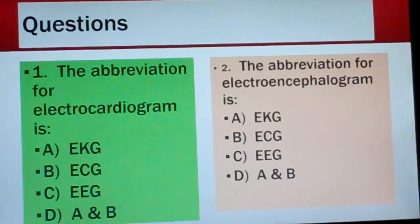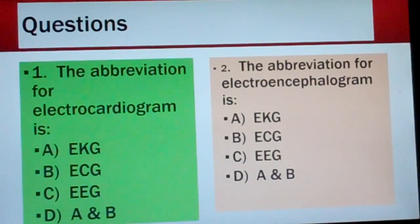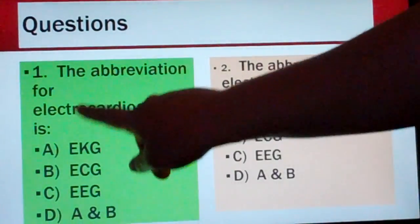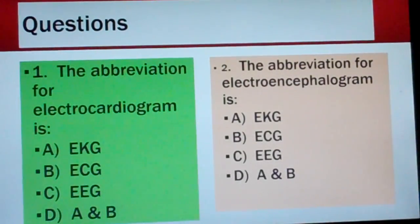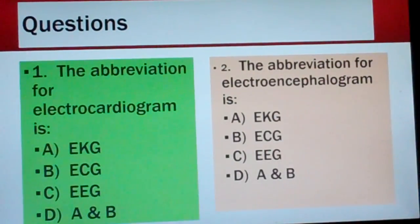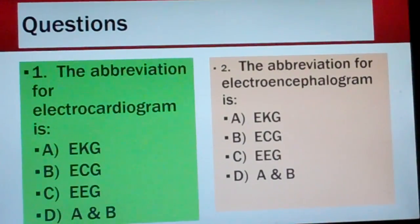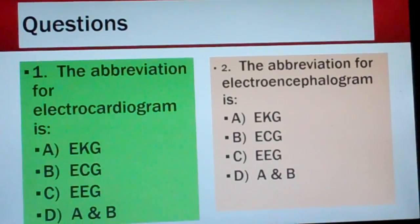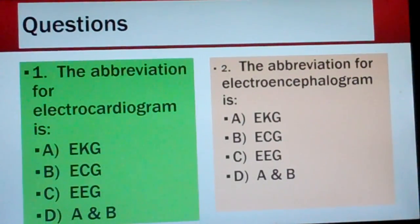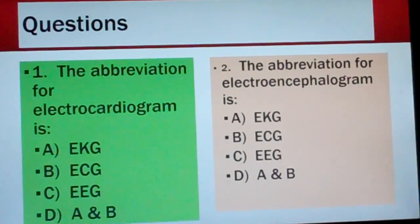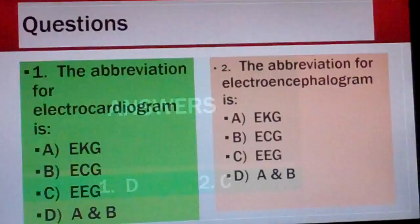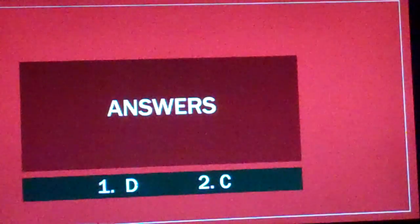Number one: the abbreviation for electrocardiogram is A) EKG, B) ECG, C) EEG, or D) A and B. Number two: the abbreviation for electroencephalogram is A) EKG, B) ECG, C) EEG, or D) A and B. Answers: number one was D — both EKG and ECG. Number two was C — EEG.